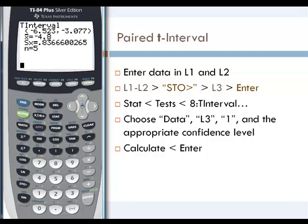So we can be 99% confident that our difference between L1 and L2 is between negative 6.523 and negative 3.477.